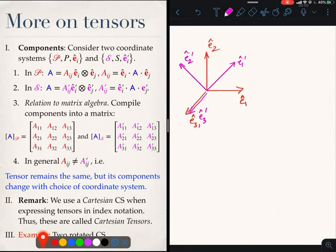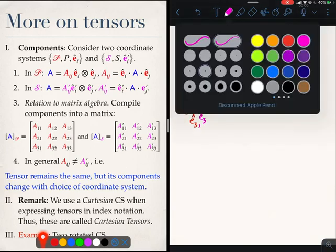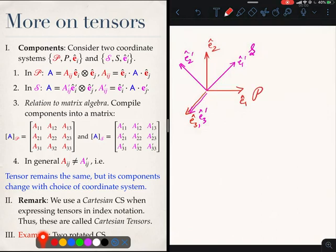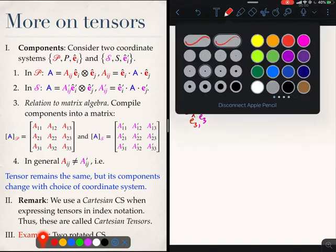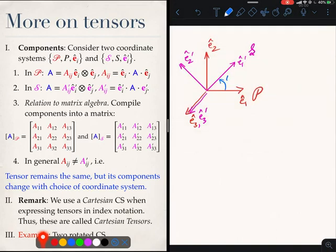Basically, we have rotated P by 45 degrees about E3 to get S.